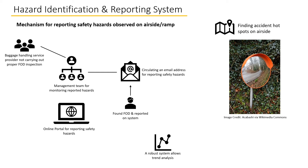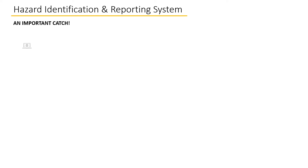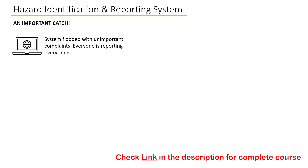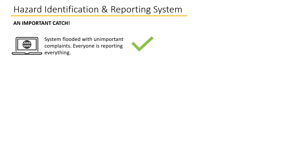Airport management can then gauge its progress in airside safety by analyzing whether safety hazard reports are following an increasing or decreasing trend year by year. An important catch is that on the face of it, such reporting systems appear to be flooded with complaints that don't seem that critical. However, you must understand that this is normal for such reporting systems, and it does not mean that the system is any less efficient.